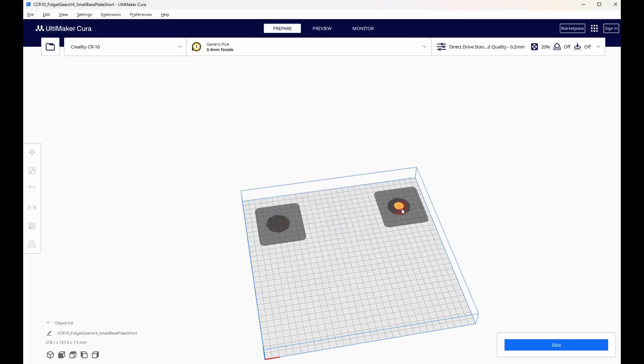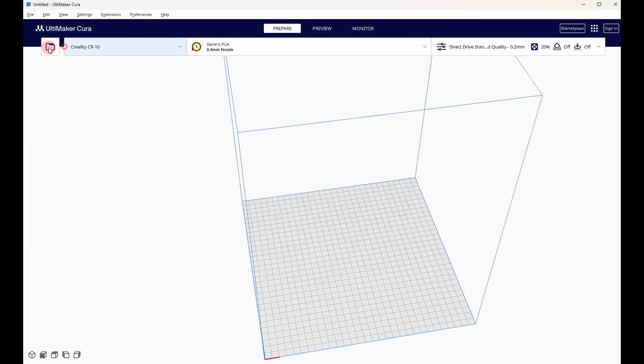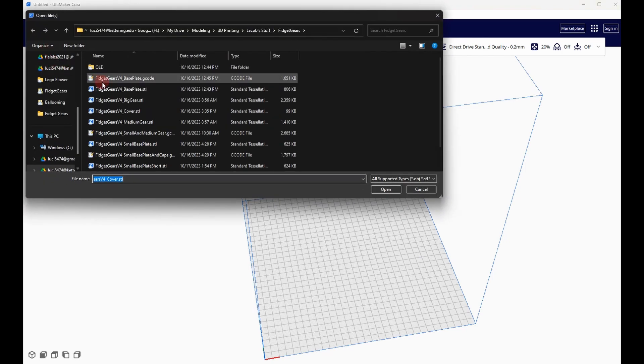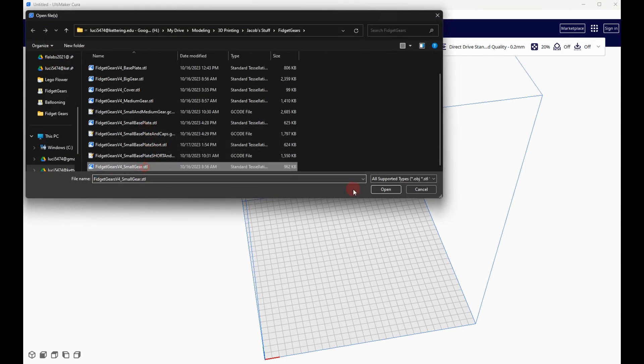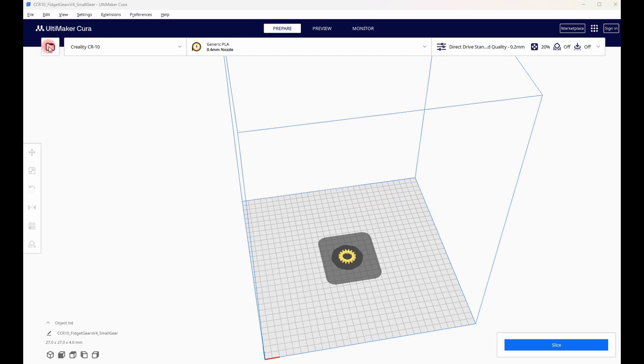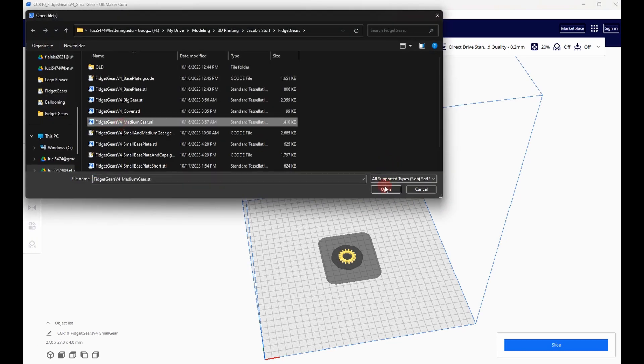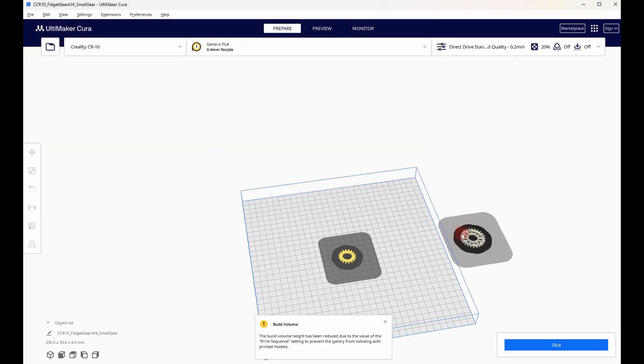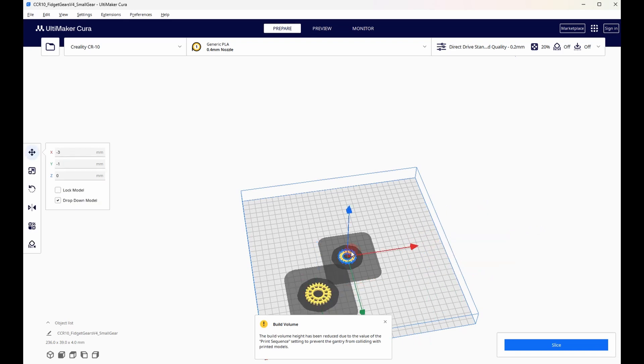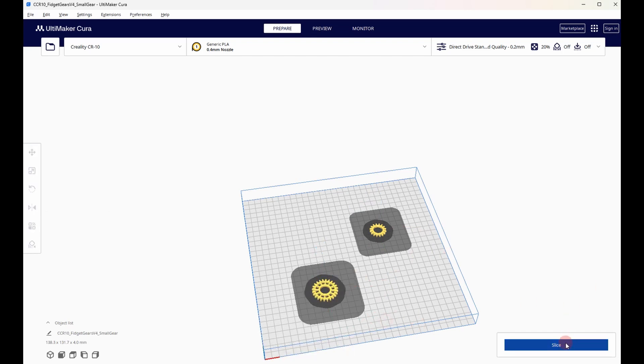Now I'll clear the build plate and bring in the STLs for the small gear and the medium gear. Again I'll position them on the build plate so that they can be printed one at a time. Once the parts are positioned, slice them and save them to your computer.